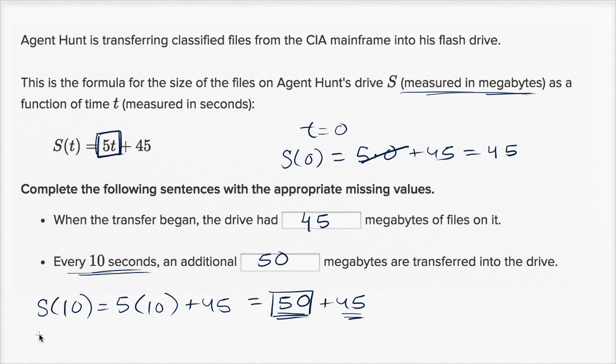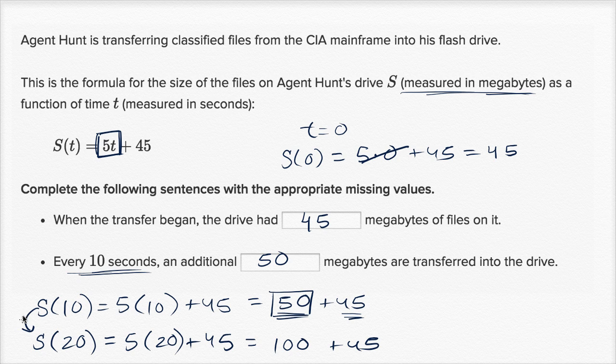And you could test that more if you want. You could say, okay, let's go another 10 seconds. S of 20 seconds, that's going to be five times 20 plus 45, which is equal to 100 plus 45. So notice, when 10 seconds have passed in time, when we've increased time by 10 seconds, we've increased memory. The megabytes we're using has increased by 50.